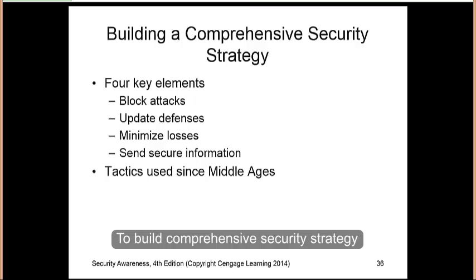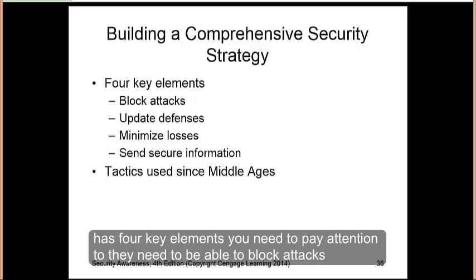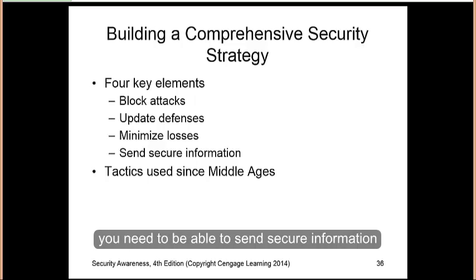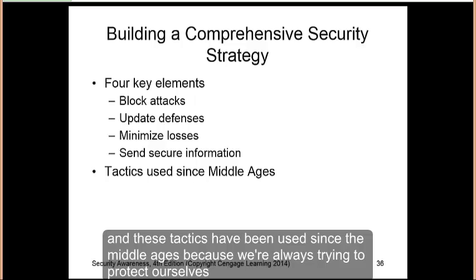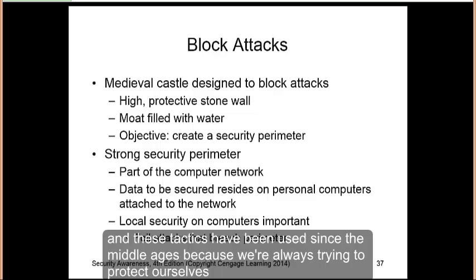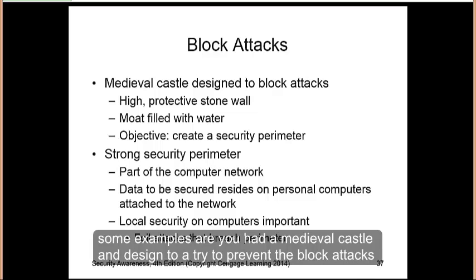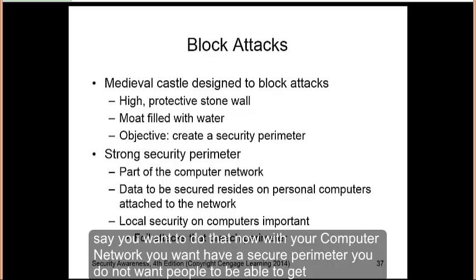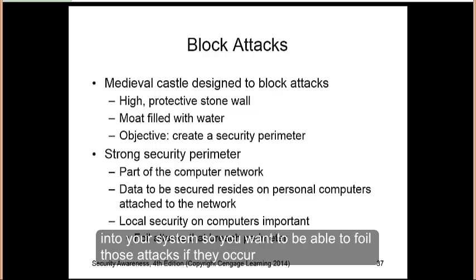To build a comprehensive security strategy, there are four key elements: block attacks, update your defenses when attacks occur, minimize your losses, and send secure information. These tactics have been used since the Middle Ages. For blocking attacks, a medieval castle was designed to prevent them — with high protective stone walls, a moat, and a security perimeter. You want to do the same with your computer network: have a secure perimeter so people cannot get into your system and foil attacks as they occur.